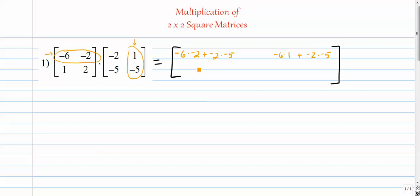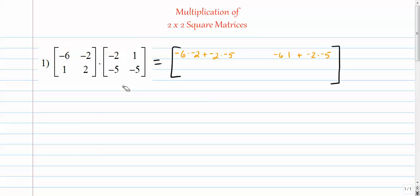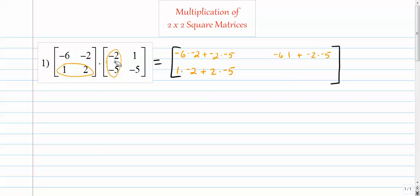Next up, this entry down here is row 2, column 1. So we're going to use row 2, column 1, and multiply 1 times negative 2, then add it to the product of 2 and negative 5. Then row 2, column 2 comes from the second row and the second column: 1 times 1 plus 2 times negative 5.